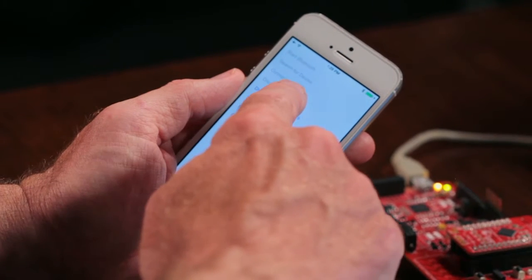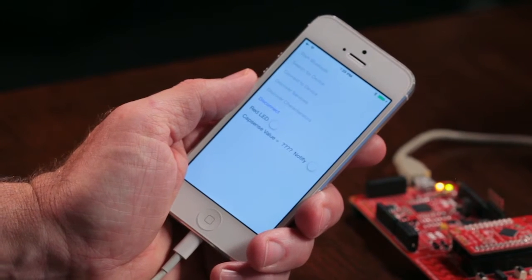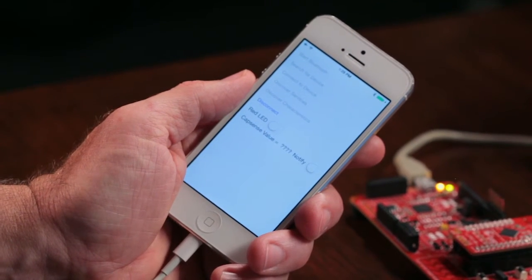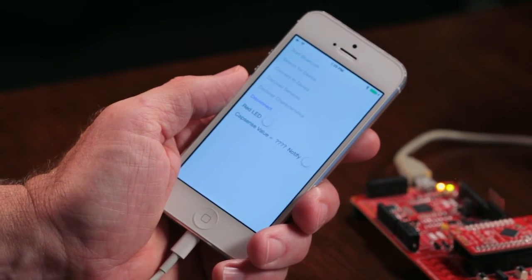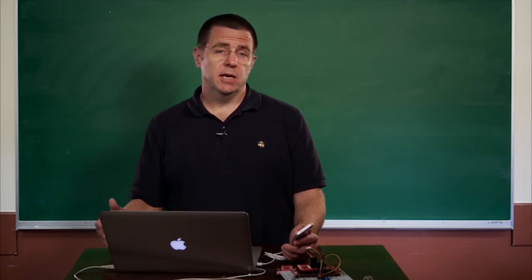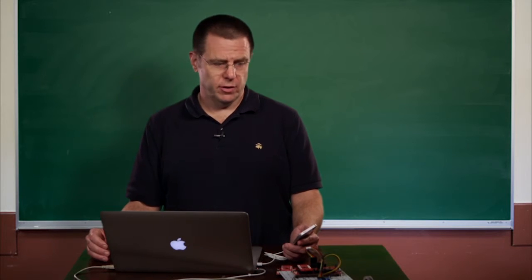I can then discover the specific CapSense and LED characteristic which are part of the service. Once that's done, I can actually start sending commands to those characteristics.